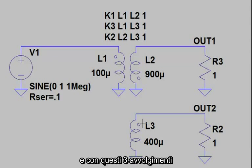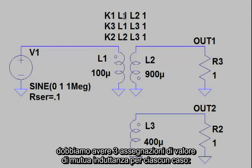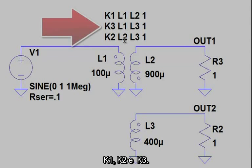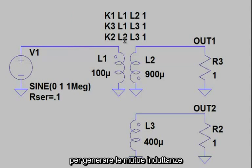A transformer with these three windings will usually have three mutual inductance statements, K1, K2, and K3. Entering all these inductor names by hand to generate these individual statements is a bit tedious.